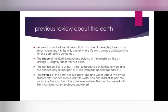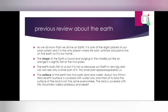Now, the shape of the Earth is round and bulging in the middle, just like an orange, and it is slightly flat at the two poles. We say that Earth appears flat because we can see only a part of it at a time. But astronauts who have gone to space said that Earth is not flat — it is spherical in shape. The surface of Earth has two parts: one is land and the other is water. About two thirds of the surface is covered with water and only one third is land.